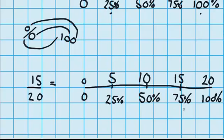And my double check is, I know that 75% is 50% plus 25%. So, 10 plus 5, yep, it equals 15. So, on my double number line, you can see that 15 out of 20 is the same as 75 out of 100, or 75%.